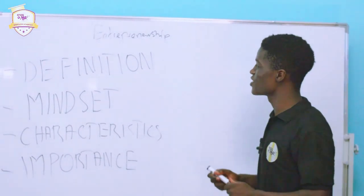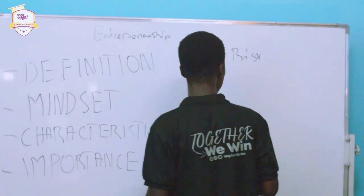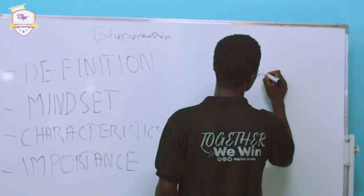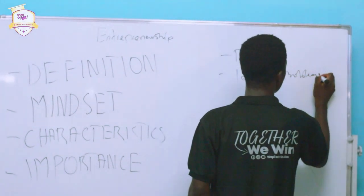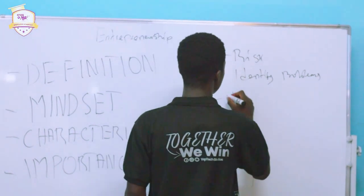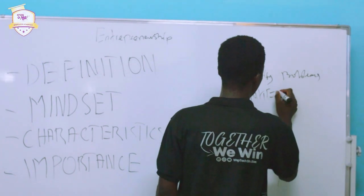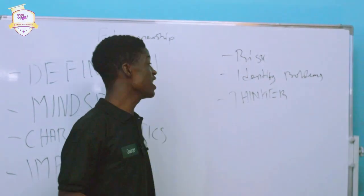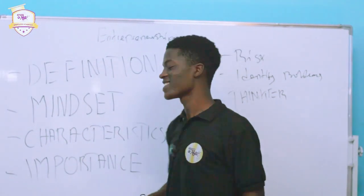An entrepreneur understands something called RICS. An entrepreneur identifies problems. An entrepreneur is a thinker — I would like to put this in caps because entrepreneurs are thinkers. And I always like to say this: entrepreneurs don't commit mistakes because they are fast learners.